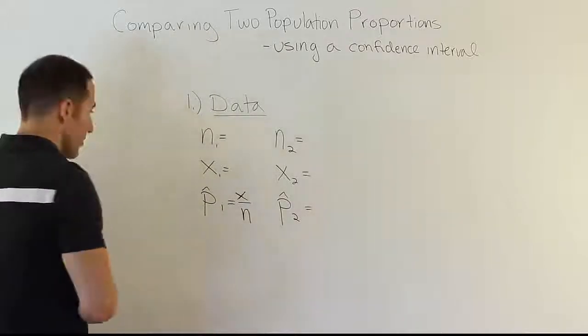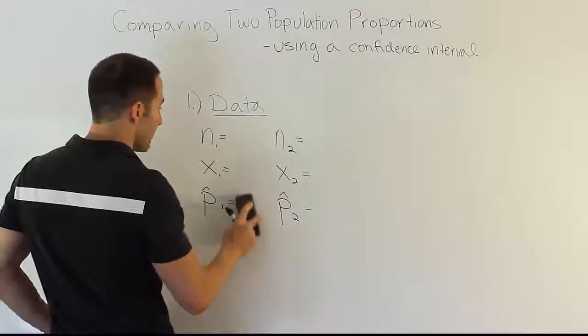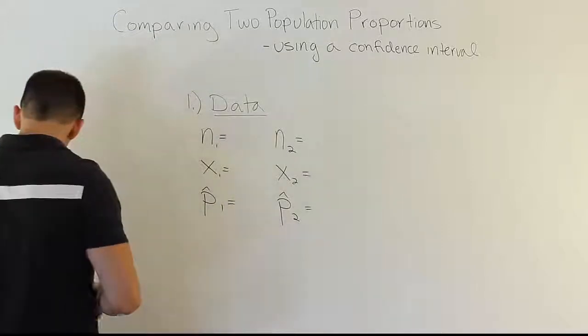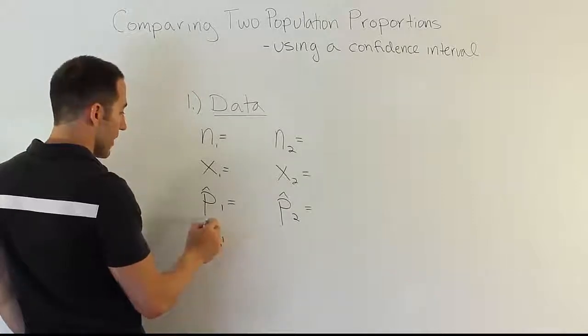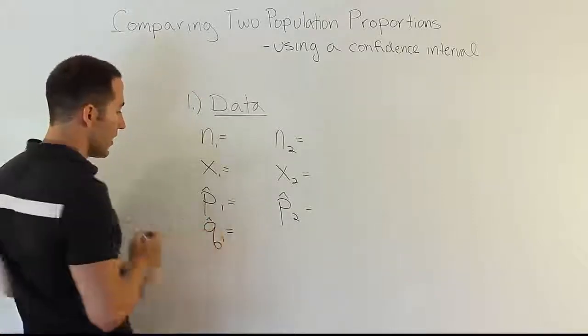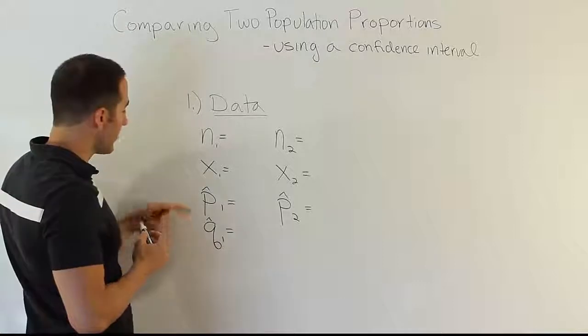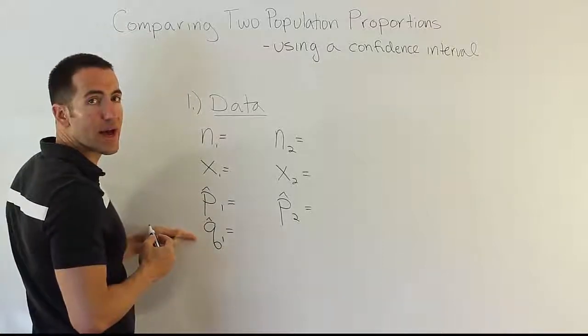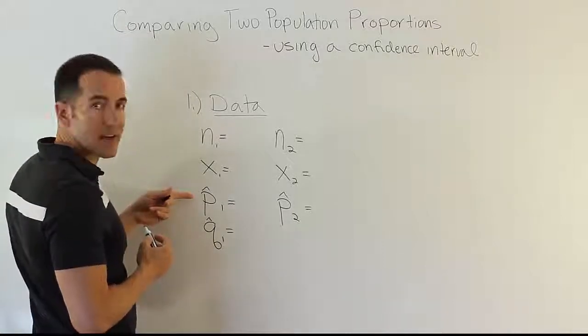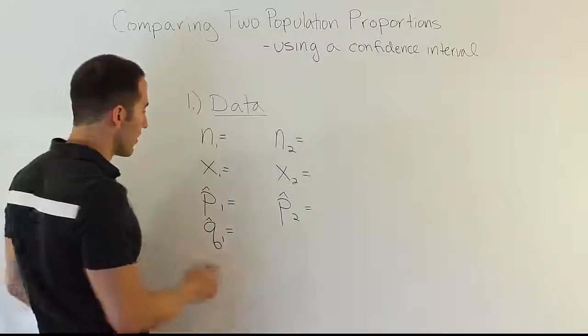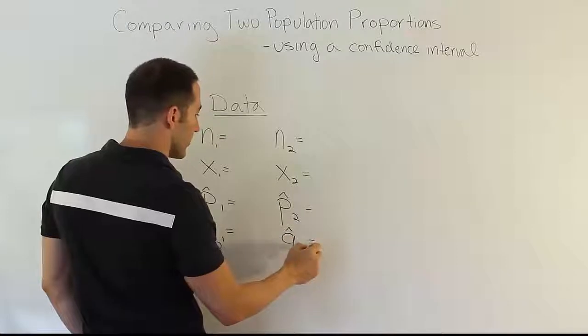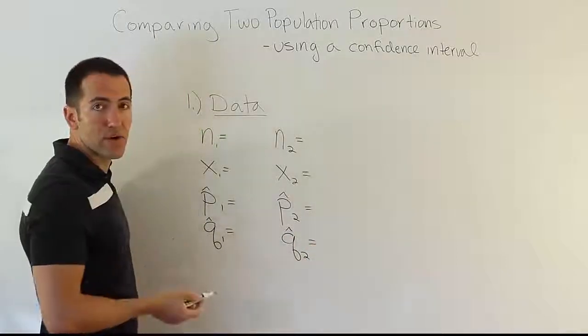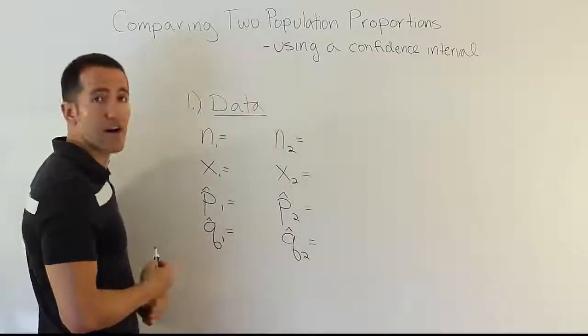From there, since we're dealing with a confidence interval, we can also get this quantity, which is the q hat. And that q hat quantity is just a complement of p hat. So, if p hat is 40%, q hat is 60%. If p hat is 30%, this is 70%, so on and so forth. And then, q hat will be also derived.